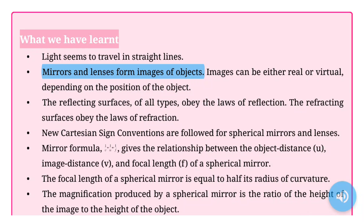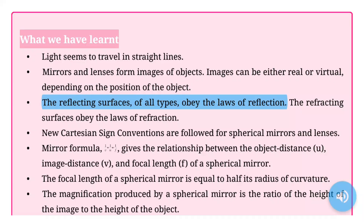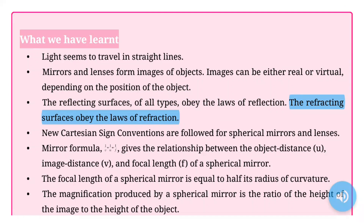What we have learned: Light seems to travel in straight lines. Mirrors and lenses form images of objects. Images can be either real or virtual depending on the position of the object. The reflecting surfaces of all types obey the laws of reflection. The refracting surfaces obey the laws of refraction. New Cartesian sign conventions are followed for spherical mirrors and lenses.